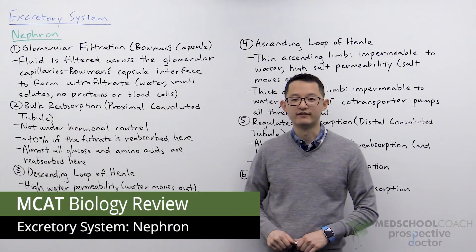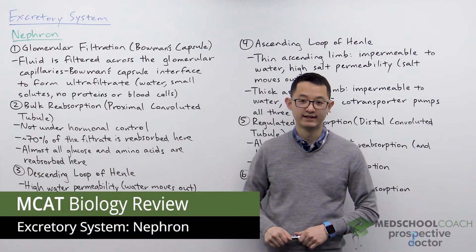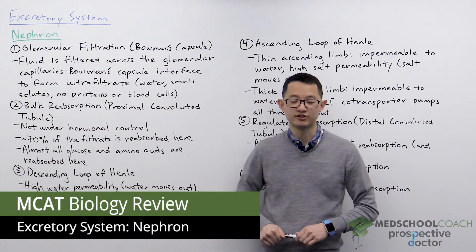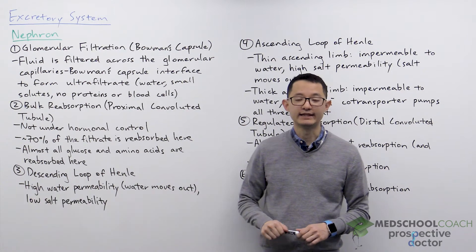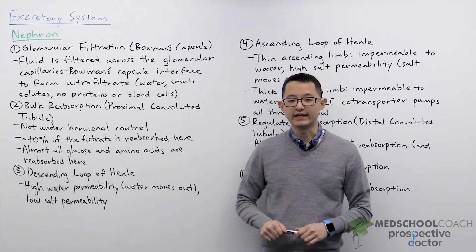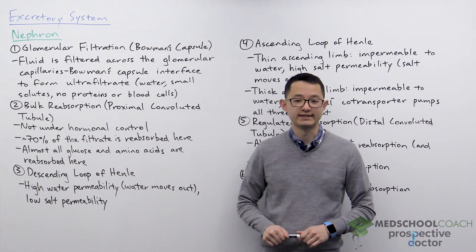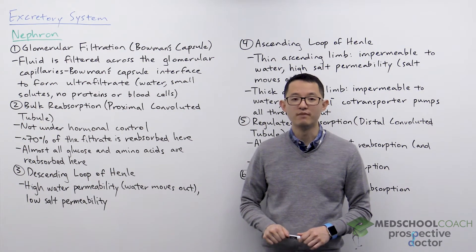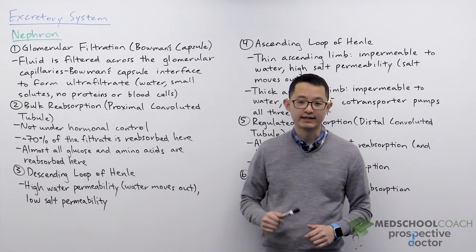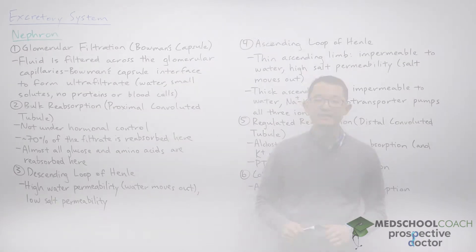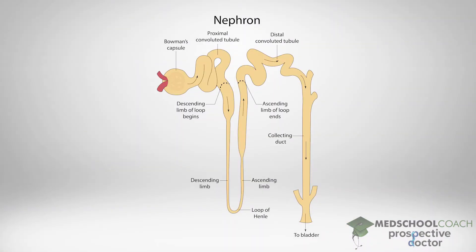In this video we're going to cover the nephron. The nephron is the functional unit of the kidney, and in adults each kidney consists of about 1 million nephrons. In this diagram you can see the different components of the nephron.